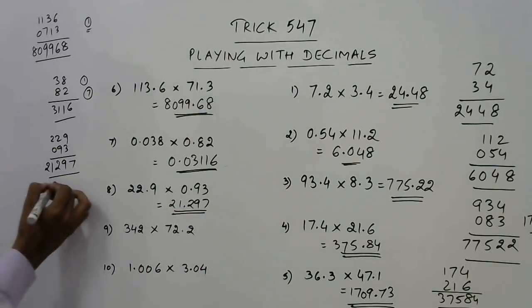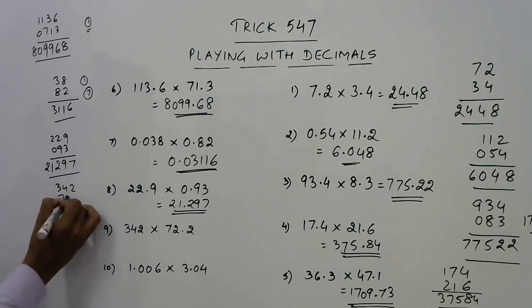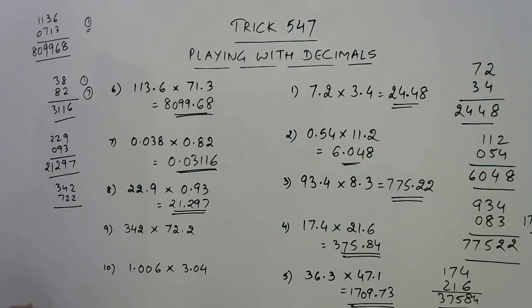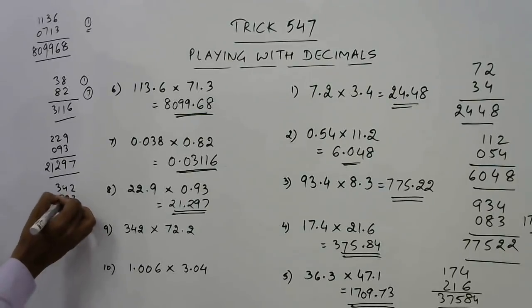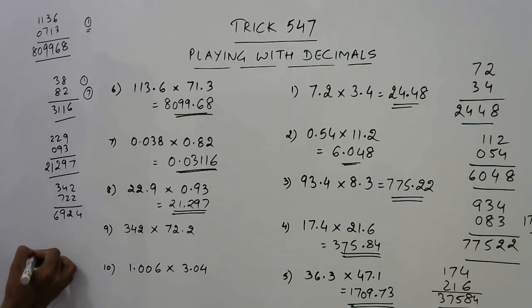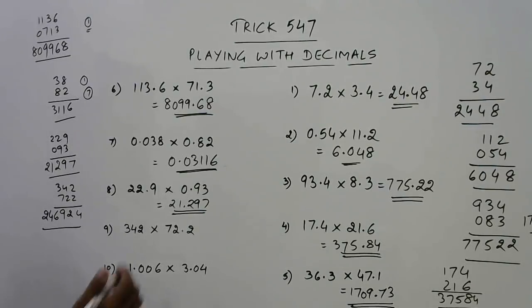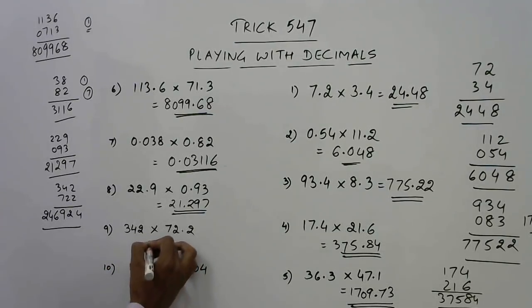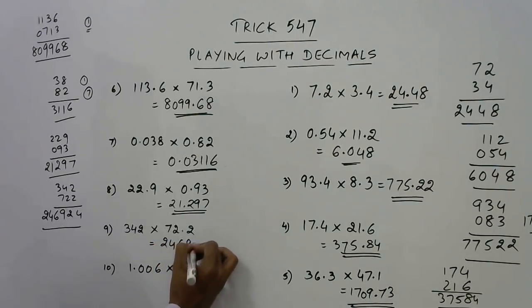Let's see this one. 342 and 722. Working through the steps: 4, 12, 2, 9, 6, 24. So 246924 is the product. So only one place of decimal, that is 2469.24. This is the product.